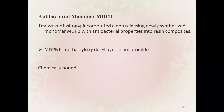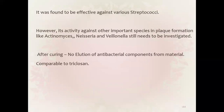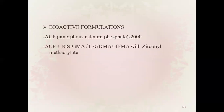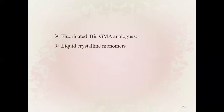Antibacterial monomers: Imazato et al. in 1994 incorporated a non-releasing newly synthesized monomer MDPB with antibacterial properties into resin composite. MDPB is methacryloyloxydecyl pyridinium bromide, chemically bound in the resin. It was found to be effective against Streptococcus, however its activity against most important species in plaque formation like Actinomyces still needs investigation. After curing, no elution of antibacterial components from the material occurs — comparable to triclosan. Other bioactive formulations include ACP (amorphous calcium phosphate) and ACP plus Bis-GMA/TEGDMA/HEMA with zirconyl methacrylate, chlorinated Bis-GMA analogues, and liquid crystalline monomers.